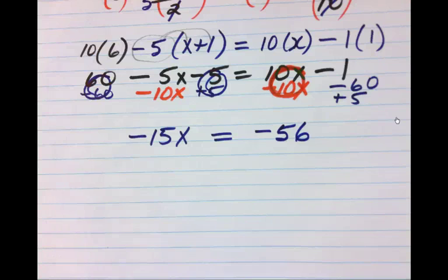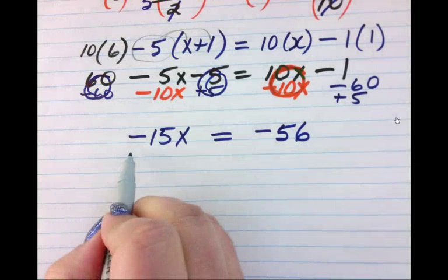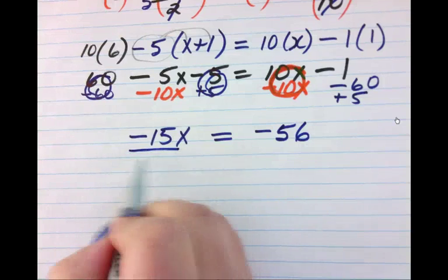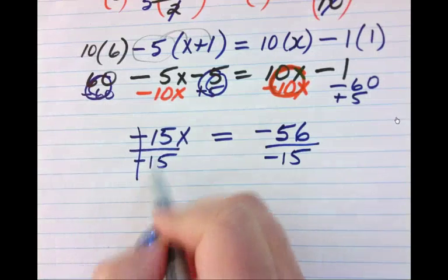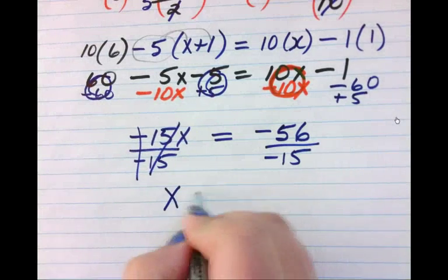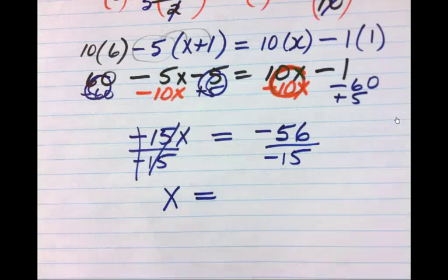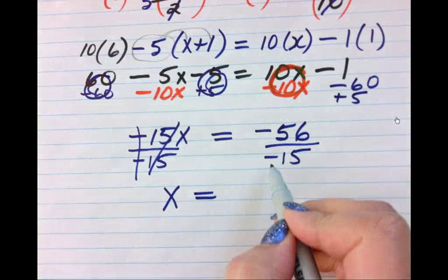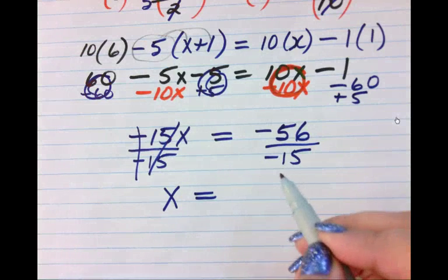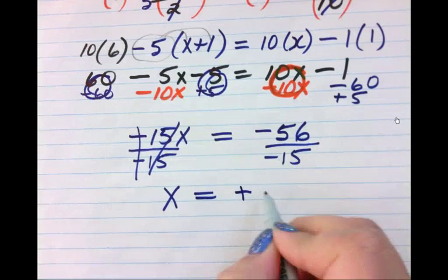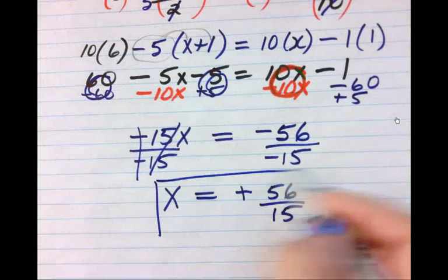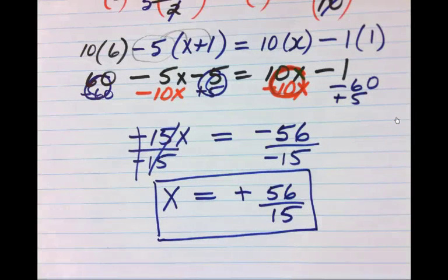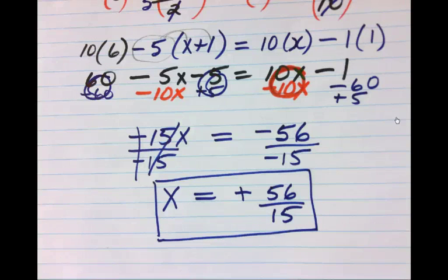All right, so now I've got negative 15x equals negative 56. How do I simplify this? Divide both sides by negative 15. Okay, so that equals x on this side, those cancel, it reduces to 1. And then over here I've got a negative over a negative, negative divided by negative equals positive, so I have positive 56/15. Does that reduce? No, so if I can reduce the fraction I'm going to reduce my fraction, otherwise that's your answer. Cool, all right.